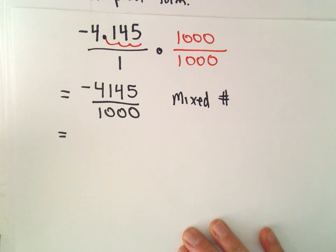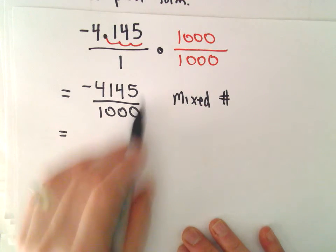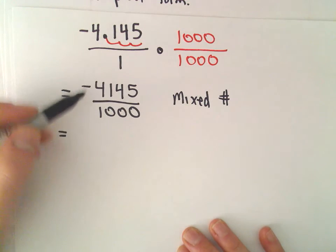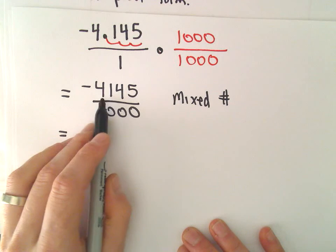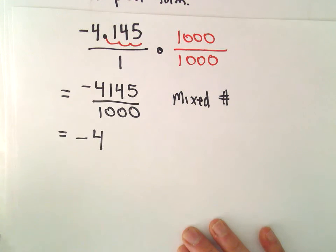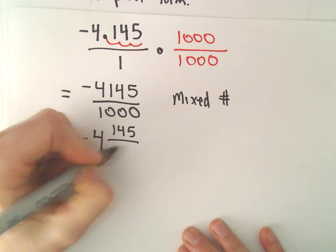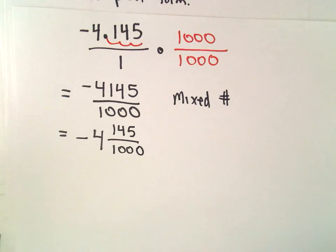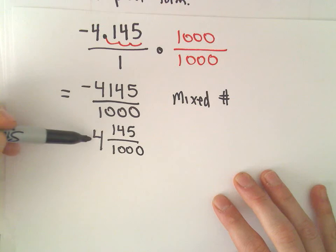Another way I'm recognizing to kind of make the fraction smaller. Well, I know we have a negative over a positive, so it's a negative. 1,000 would go into 4,145 exactly four times without going over. We would have 145 over 1,000 left. So, as a mixed number, we can write this fraction as negative 4 and 145 over 1,000.